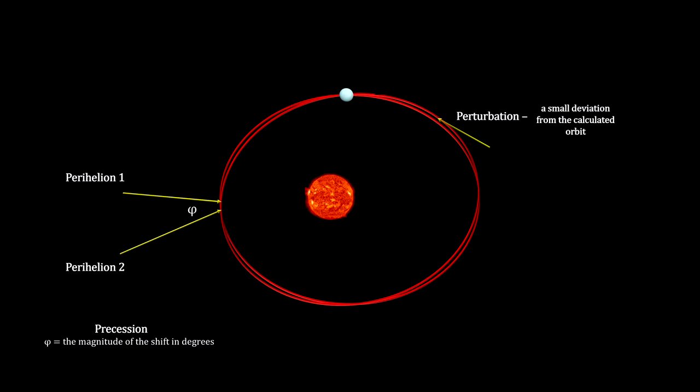Using Newton's gravitational equations, all known perturbations and precessions were calculated and found to fit the observations for all the planets except one: Uranus.